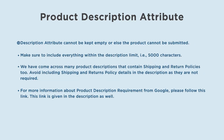The description attribute cannot be kept empty, or else the product cannot be submitted. Make sure to include everything within the description limit, that is 5000 characters. We have come across many product descriptions that contain shipping and return policies — avoid including shipping and returns policy details in the description as they are not required. For more information about product description requirements from Google, please follow the link given in the description as well.